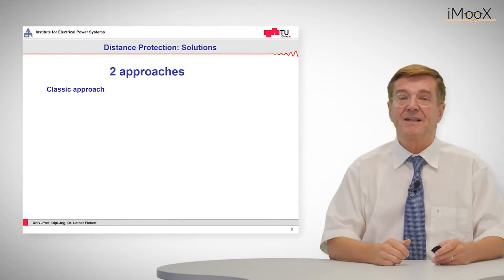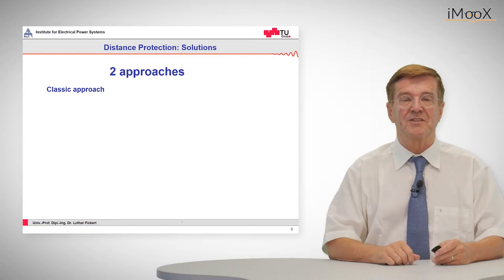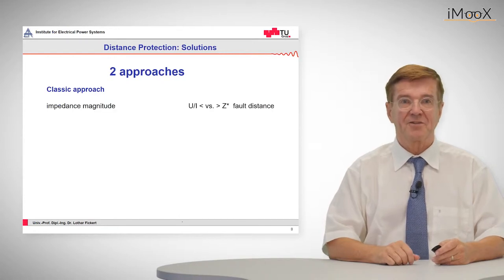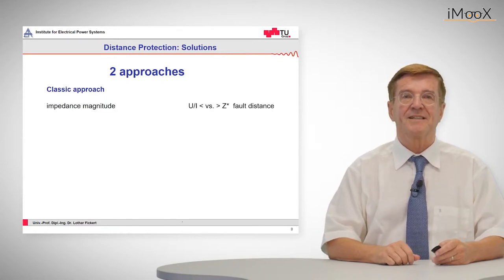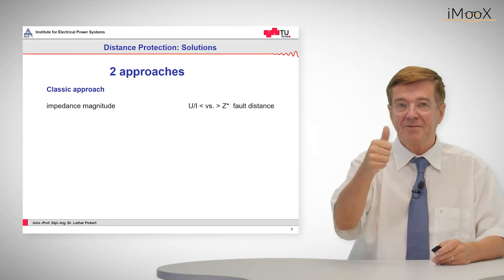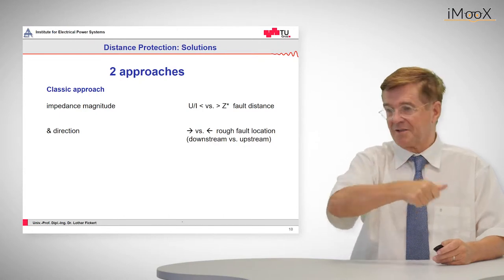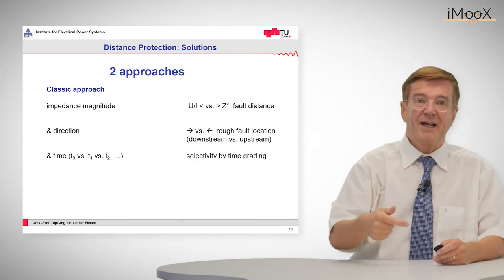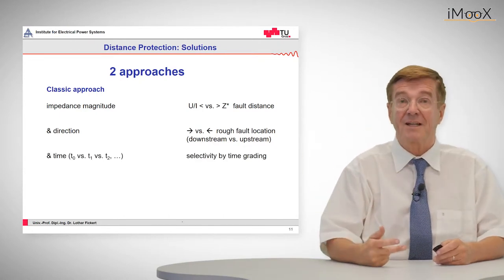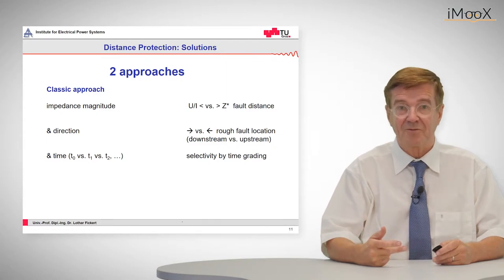So how does the relay discriminate? There are two approaches. One is the classic approach. So the classic approach is that the impedance magnitude is measured, that the direction is determined, is it downstream, is it upstream, and that accordingly a time is respected when to trip.